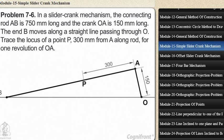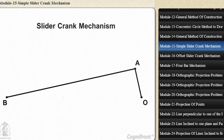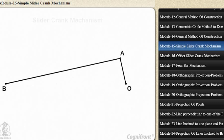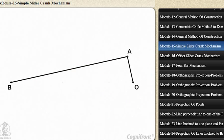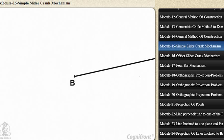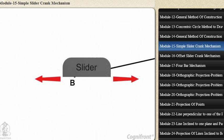The slider crank mechanism is explained as follows. The end A of the connecting rod AB is connected to the crank OA which rotates about O. The other end B is attached to a slider which slides along a straight line.